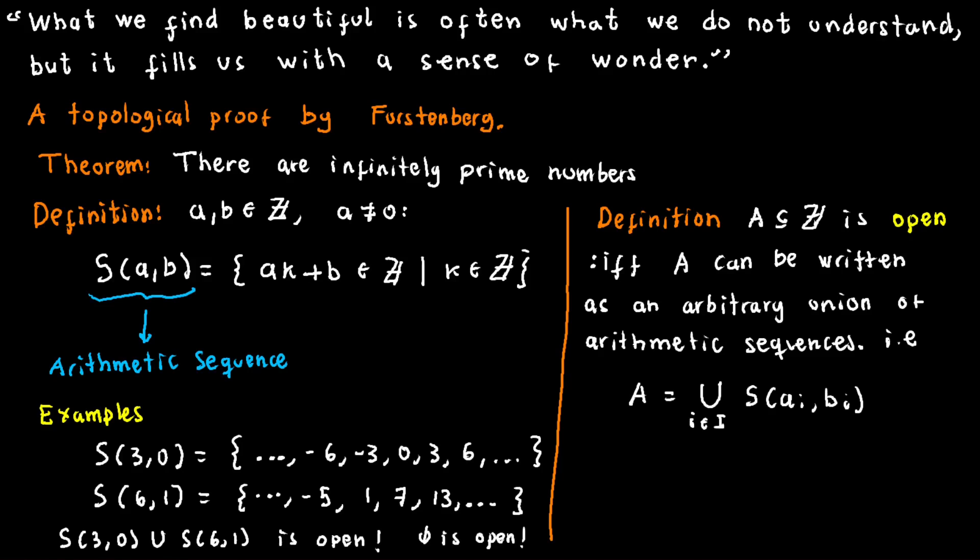Additionally, Furstenberg contends that the absence of any arithmetic sequences in the union should yield the empty set, leading him to consider the empty set itself as open.